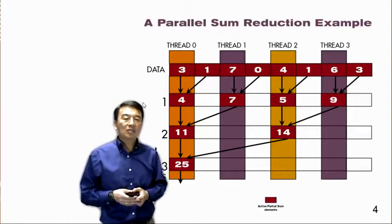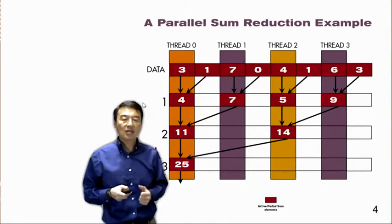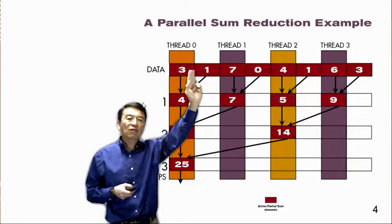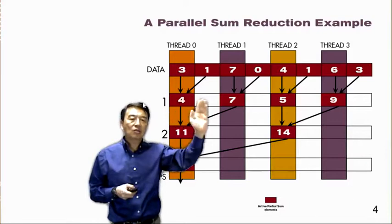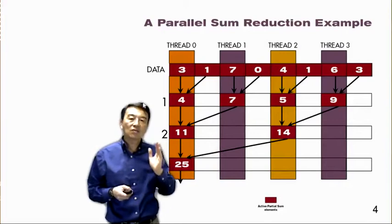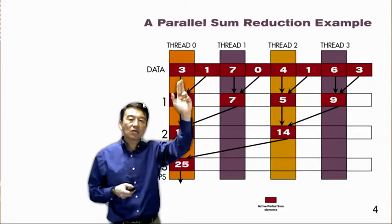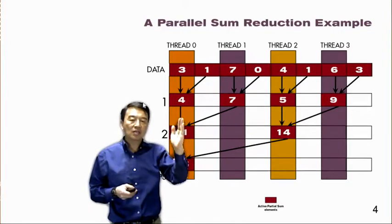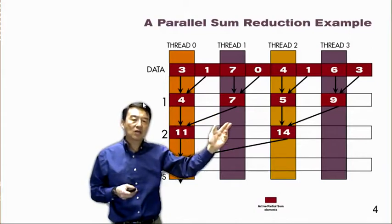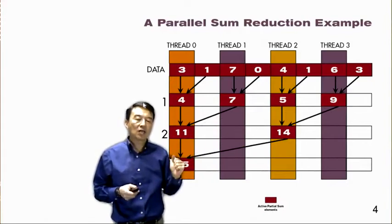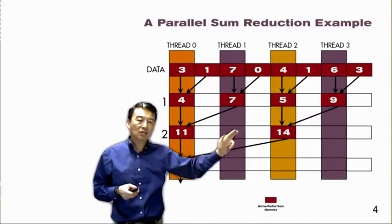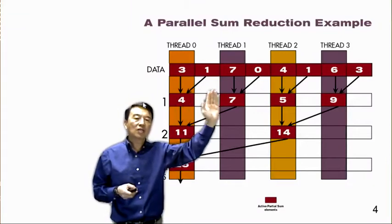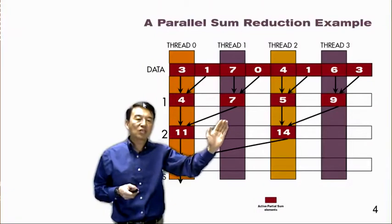Here we show a simple example of parallel sum reduction based on our kernel design. We have eight elements and we will use four threads to process them. All the threads are going to be assigned to a particular data location — this is the thread-to-data index mapping. All threads are positioned at even data locations: thread zero at element zero, thread one at element two, thread two at element four, and thread three at element six. Essentially, multiplying the thread index by two gives the position that thread is responsible for.